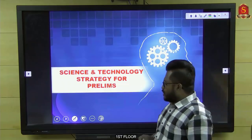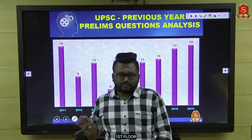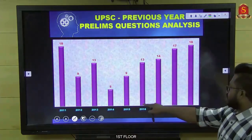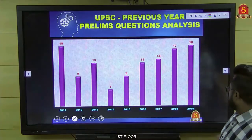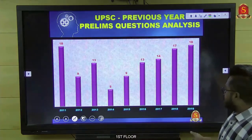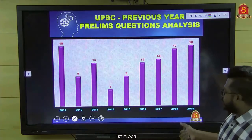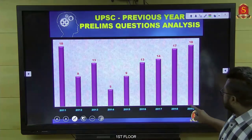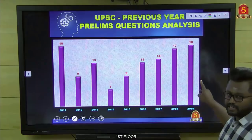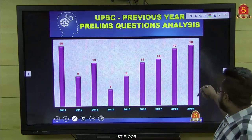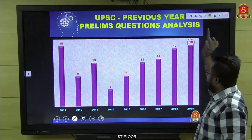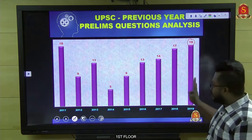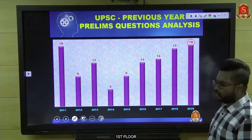Let me explain the weightage. The weightage of science and technology in prelims — I have taken this graph from 2011 to 2019. From 2014 onwards, the number of questions from science and tech had a steady state increase. In 2019, the latest, we got about 18 questions from science and tech alone.